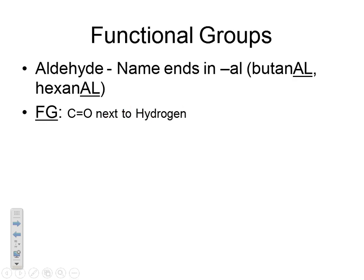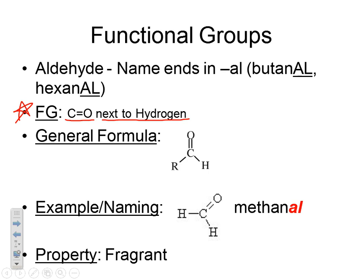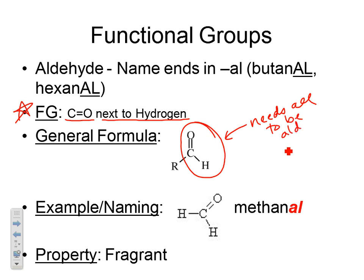The next functional group is the aldehyde. The functional group for an aldehyde is C=O (carbon double bonded to oxygen) next to a hydrogen. The general formula is R–C(=O)–H. This is critical: you need the C=O next to an H. If it's a carbon instead of a hydrogen next to the C=O, then it's not an aldehyde.